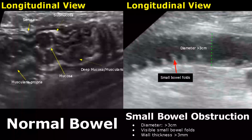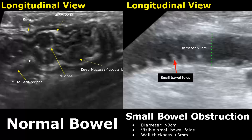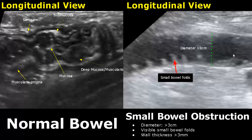Here we have an image of small bowel obstruction. This is the normal bowel with all five distinct layers. The diameter will be more than three centimeters. We will also see the small bowel folds — they will become visible in case of obstruction, and the wall thickness may also be greater than three millimeters.